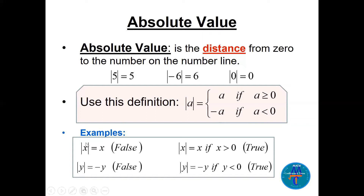Now four examples: saying |x| = x looks nice, but that's false — we don't know what x is; x can be -7, 8, or -12. Similarly, |y| = -y is also false. For things to be true, you need a condition: |x| = x if x is greater than zero, and |y| = -y if y is negative.